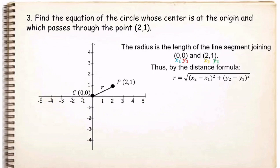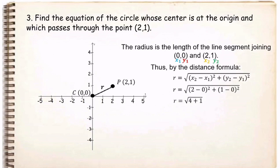Substituting these values into the equation, we have r equals the square root of (2 − 0)² + (1 − 0)². Simplifying: 2 minus 0 is 2, raised to 2 is 4. Plus, 1 minus 0 is 1, raised to 2 is also 1. So the square root of 4 plus 1 is equal to the square root of 5.